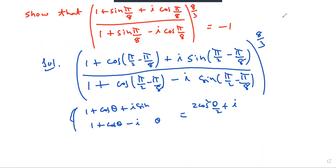1 plus cos equals 2cos². θ equals π/2 minus π/8. (1 + cosθ + i sinθ) over (1 + cosθ - i sinθ), power 8/3.